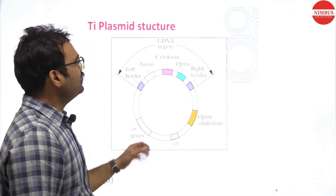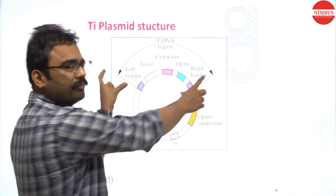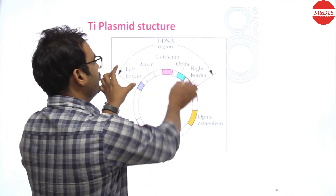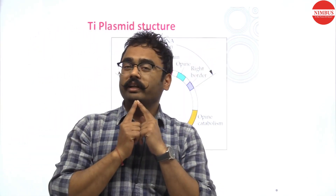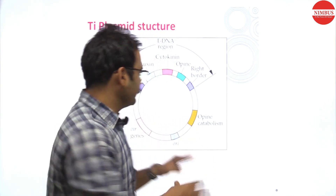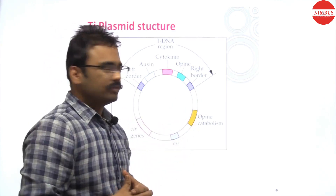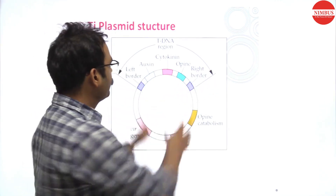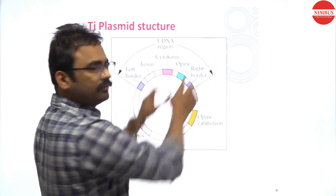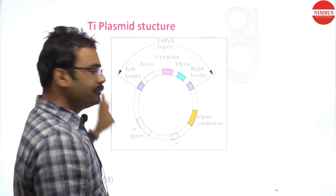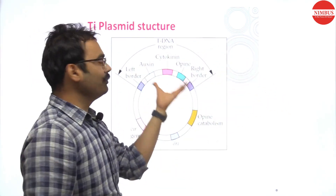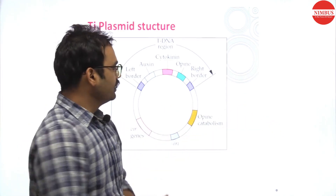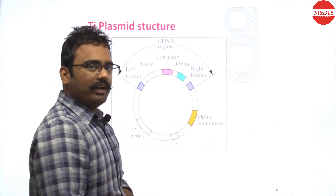The T-DNA segment is very important — it is transported inside the plant cell and fuses with the plant genome. The rest does not fuse. The virulence genes encode virulence proteins that help transfer this T-DNA from the Ti plasmid into the plant genome.